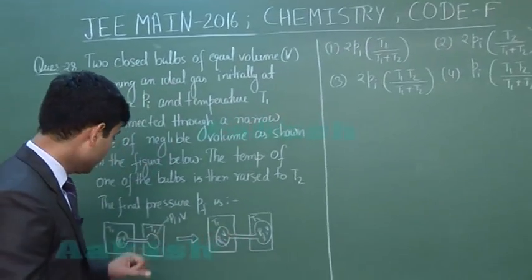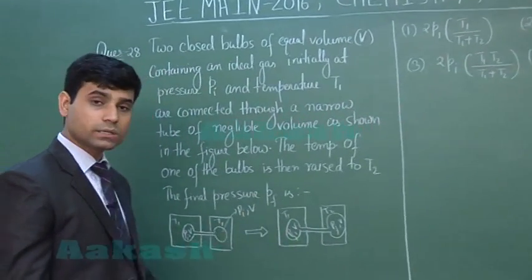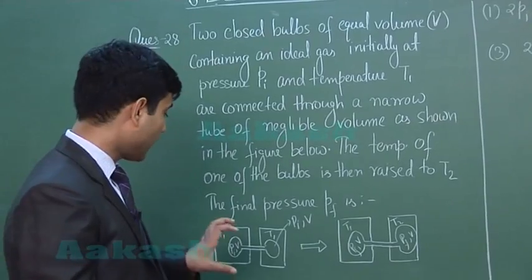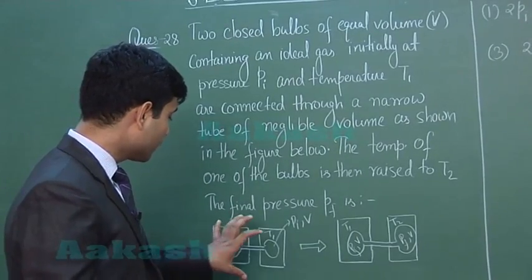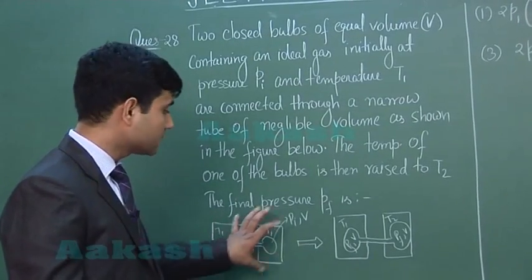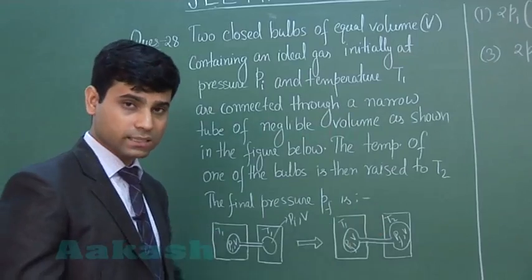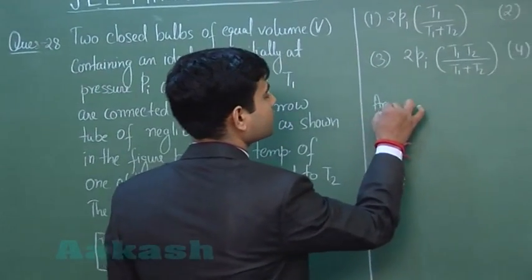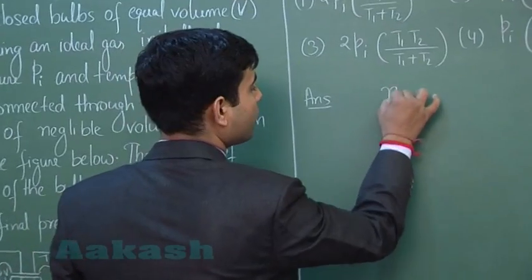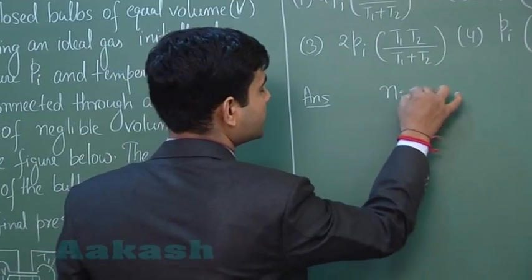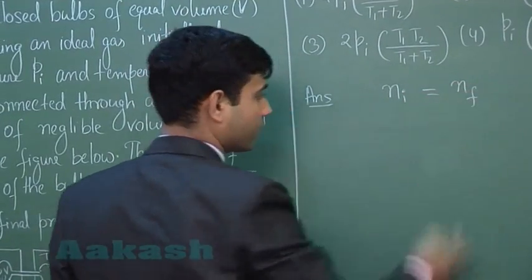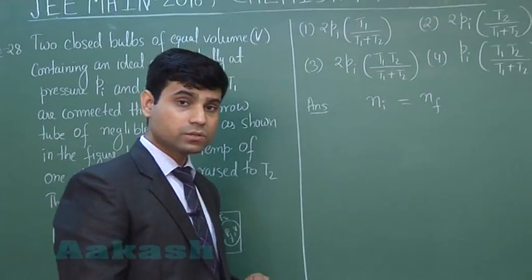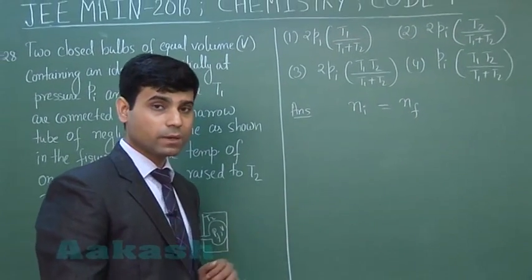How can we solve this question? In both conditions, the number of moles of gases are constant. So we can equate: number of moles of gases initially equals number of moles of gases finally. As we know, PV = nRT, so number of moles n = PV/(RT).